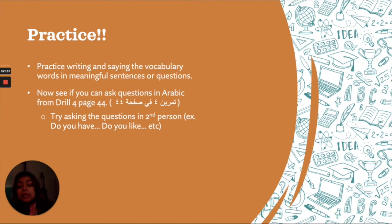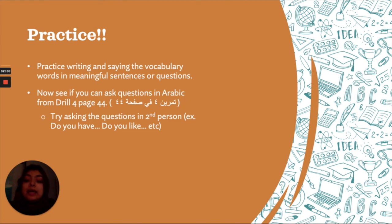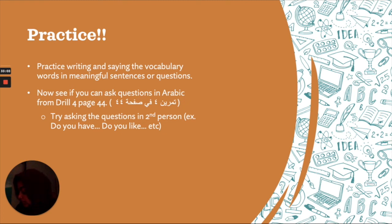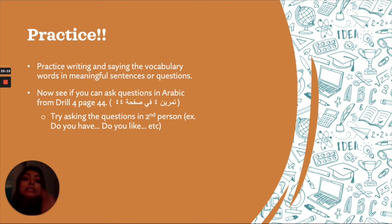كم صديقاً عندك؟ — How many friends do you have? كم قريباً في عائلتك؟ — How many relatives in your family? كم غرفةً في بيتك؟ — How many rooms in your house? Practice using كم with different words. Use the vocabulary in meaningful sentences or questions, write them down, and practice saying them out loud. Then try to answer the questions in Arabic from drill 4.